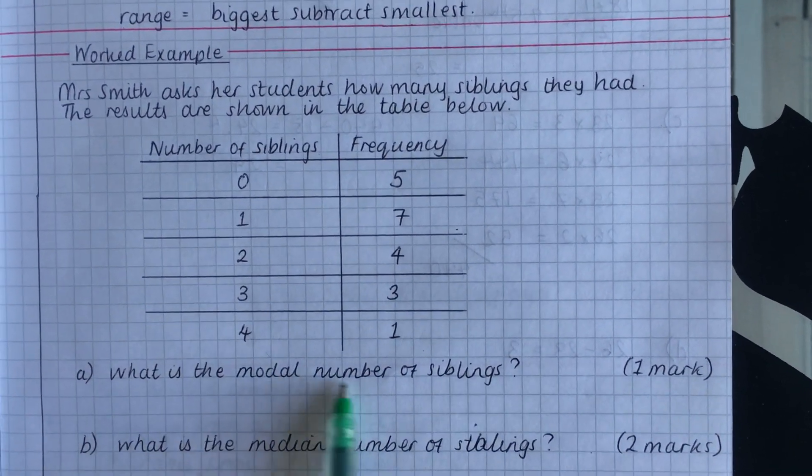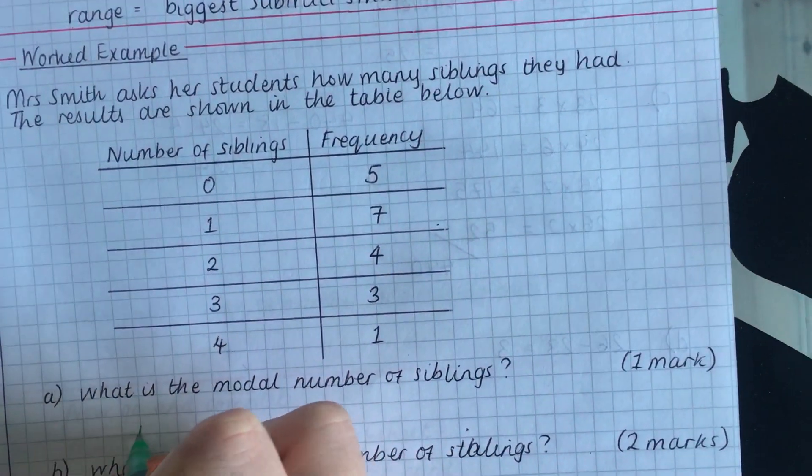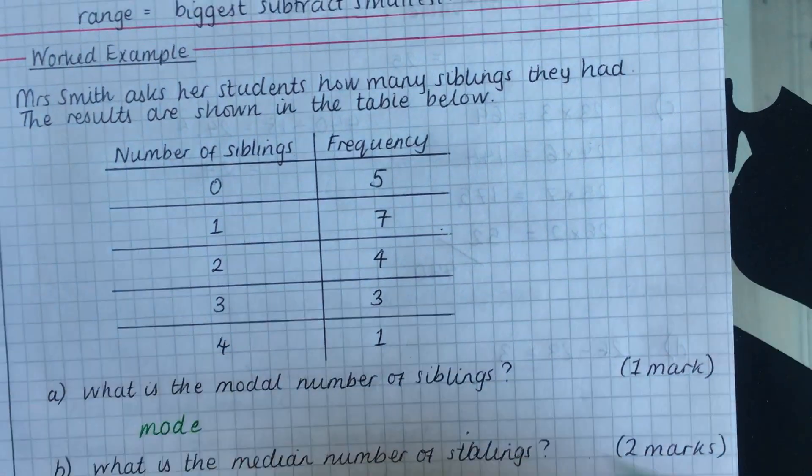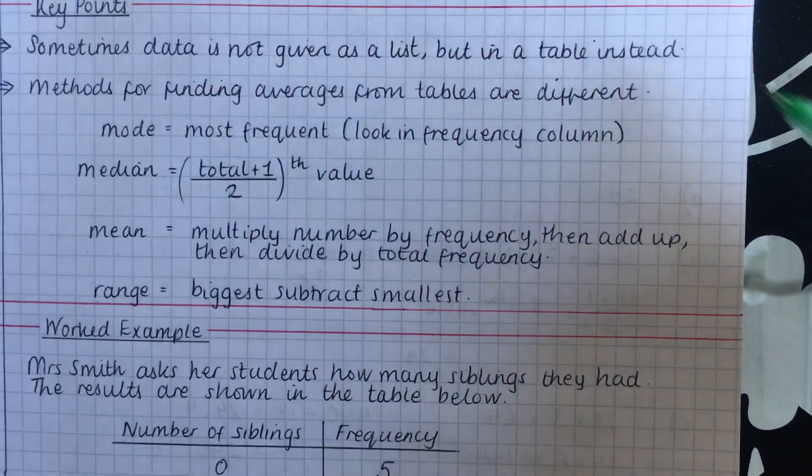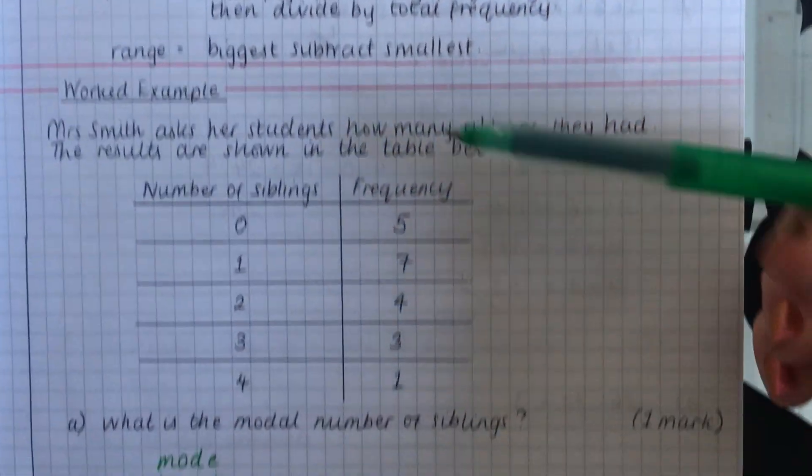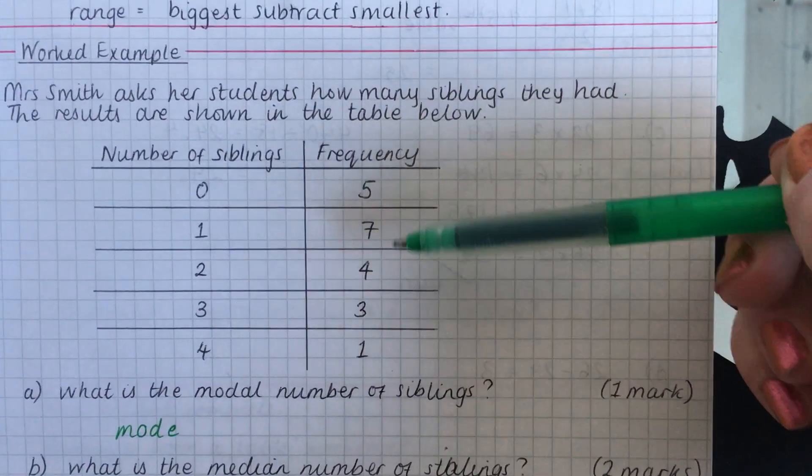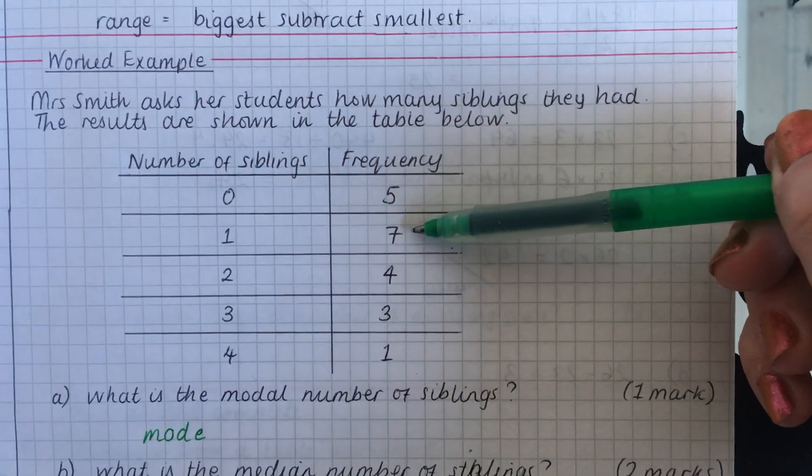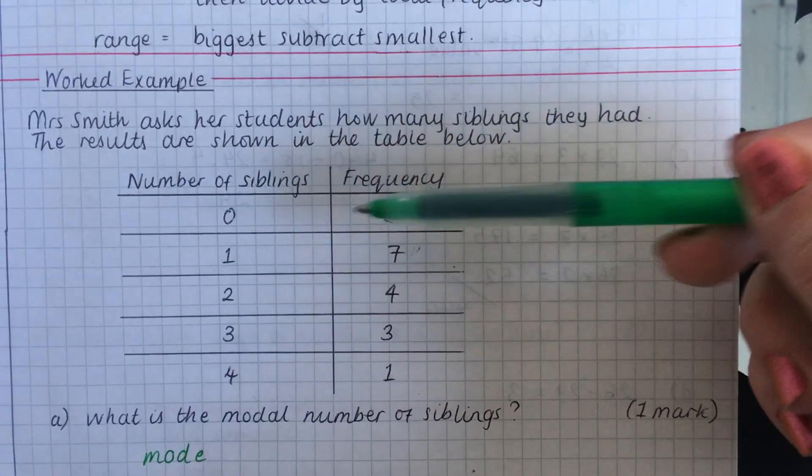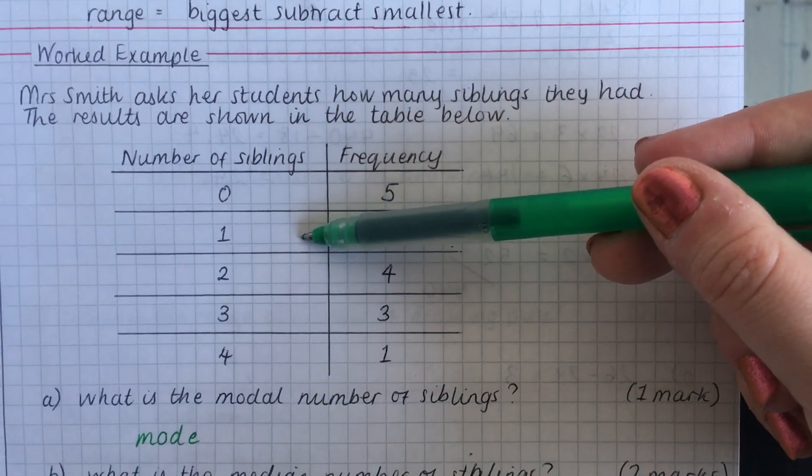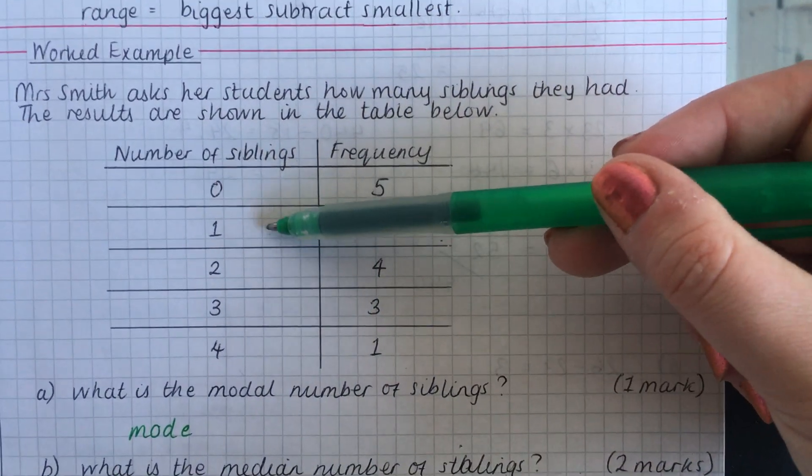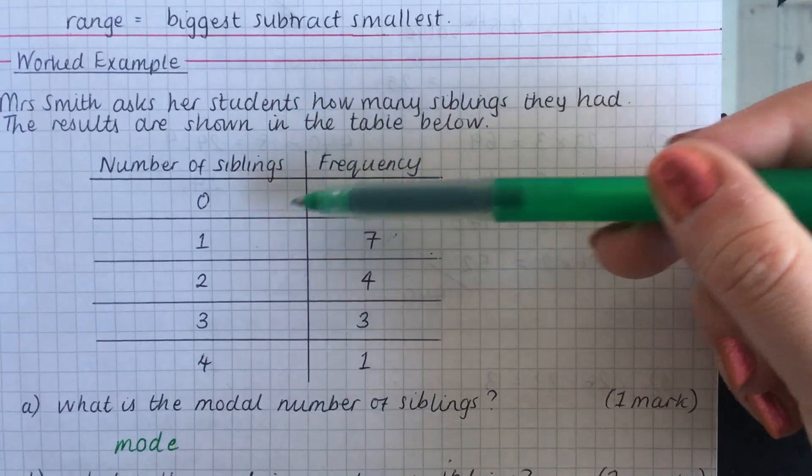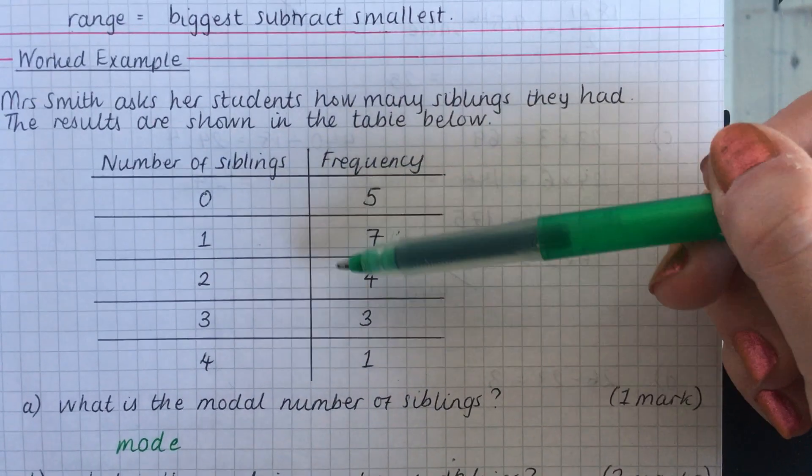Now we'll start off with the modal number of siblings. Don't forget this means the mode. And we know that the mode is the most frequent. Now going back to our key points, we've said to look in the frequency column. So if you look in the frequency column, you can see the highest frequency is number seven. That means that there are seven students that had one sibling. So we're not saying that seven comes up the most. We're saying that one comes up the most because seven people had one sibling, whereas only five people had none.